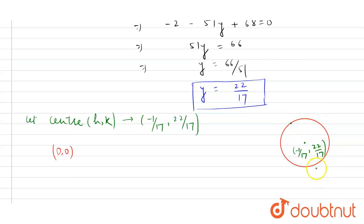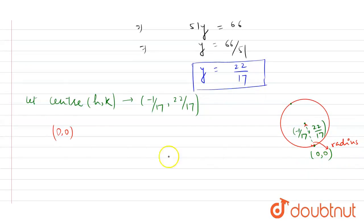This is our center which is -1/17, 22/17 and there is a point, suppose this is here, which is 0, 0 and through this point the circle is passing. Now if I join these two points students, then it is nothing but this is called your radius.